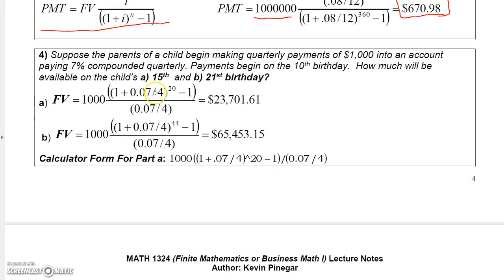I'm not going to go over number four because it's basically the same as the ones I already did — just future value problems. The first part has N equal to 20 because it's quarterly for five years. The second part has N equal to 44 because you're compounding quarterly over an 11-year period: 11 times 4 is 44. The rest is pretty straightforward.